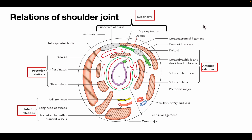Relations of the shoulder joint: Superiorly — acromion process, subacromial bursa, supraspinatus muscle, and deltoid muscle. Anteriorly — anterior fibers of deltoid, coracobrachialis and short head of biceps, subscapular bursa, subscapularis muscle, and pectoralis minor muscle. Posteriorly — posterior fibers of deltoid, infraspinatus muscle, and teres minor muscle. Inferiorly — axillary nerve, long head of triceps, and posterior circumflex humeral vessels.